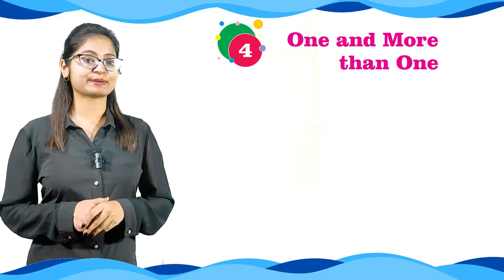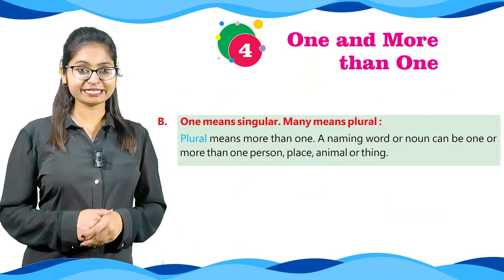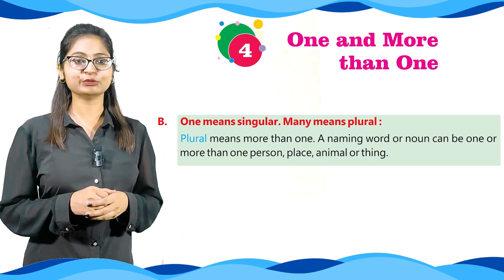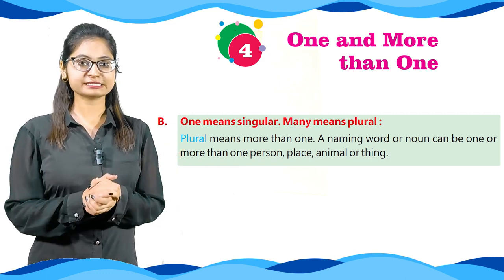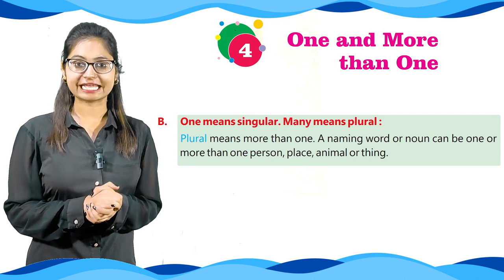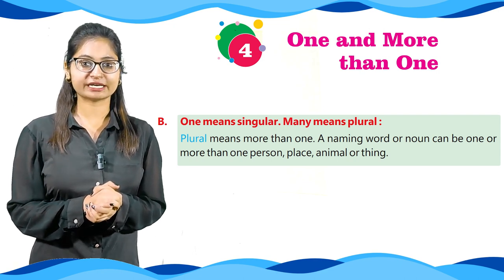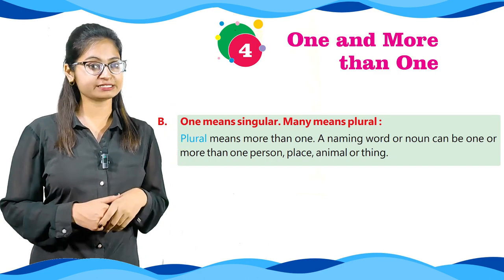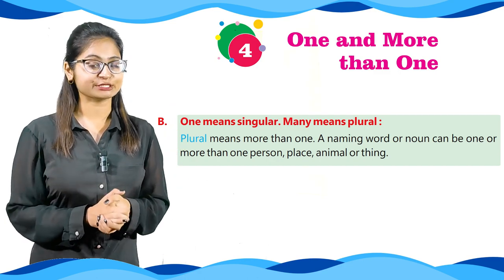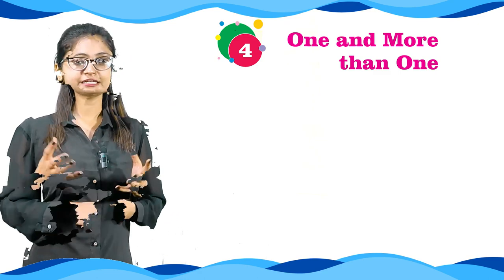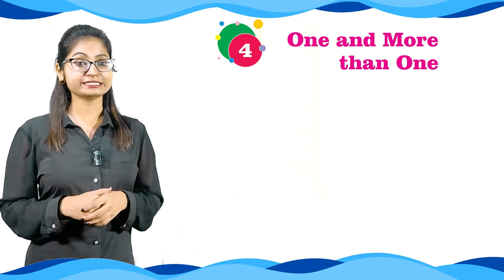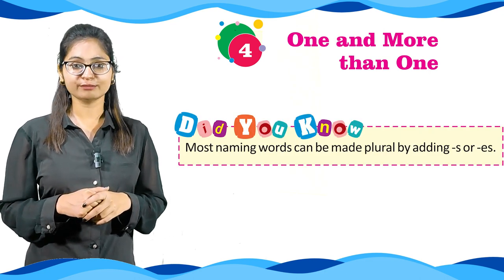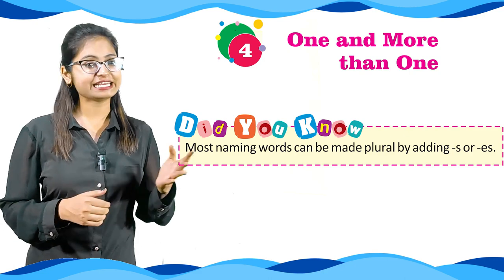Okay students, moving towards Part B. One means singular and many means plural. Plural means more than one. A naming word or noun can be one or more than one person, place, animal, or thing. Most naming words can be made plural by adding S or ES.